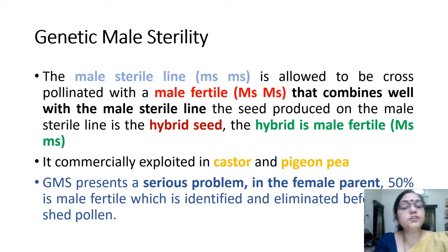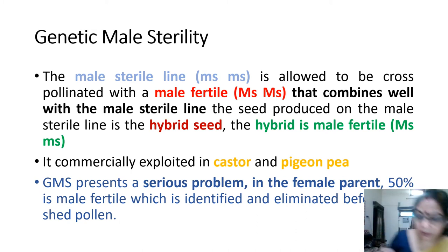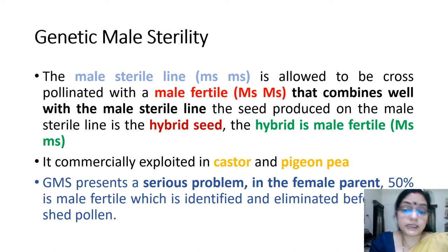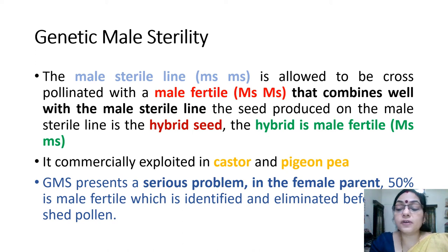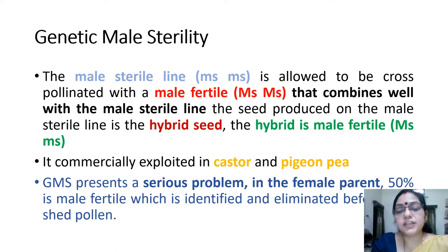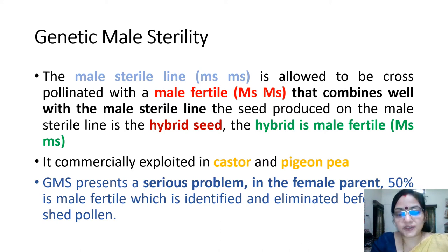In the male sterile line the gene would be a recessive gene, and in the male fertile line the gene would be a dominant gene. They combine well with the male sterile line, and the seed produced on the male sterile line is the hybrid seed. The hybrid seed is male fertile as the dominant gene comes from the fertile parent. This is commercially exploited in castor and pigeon pea.